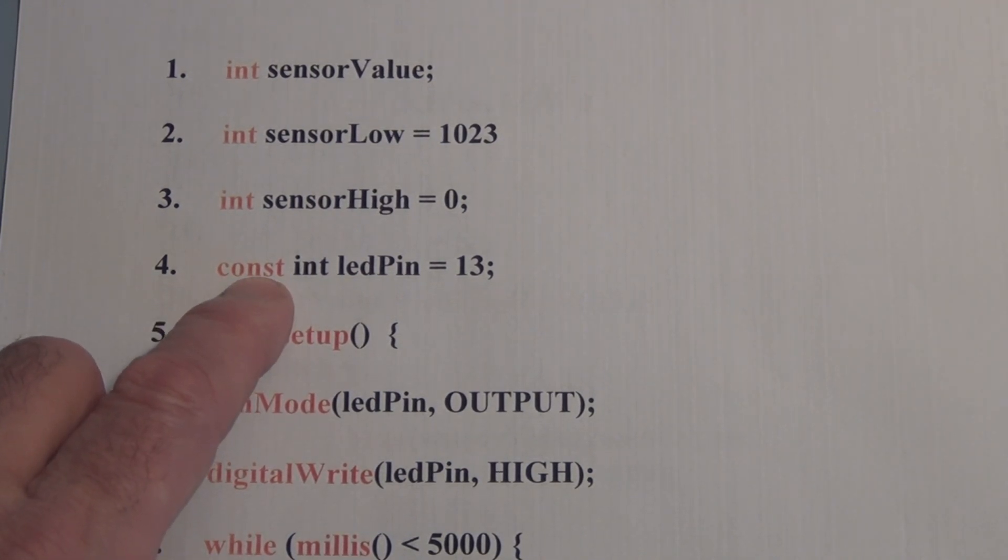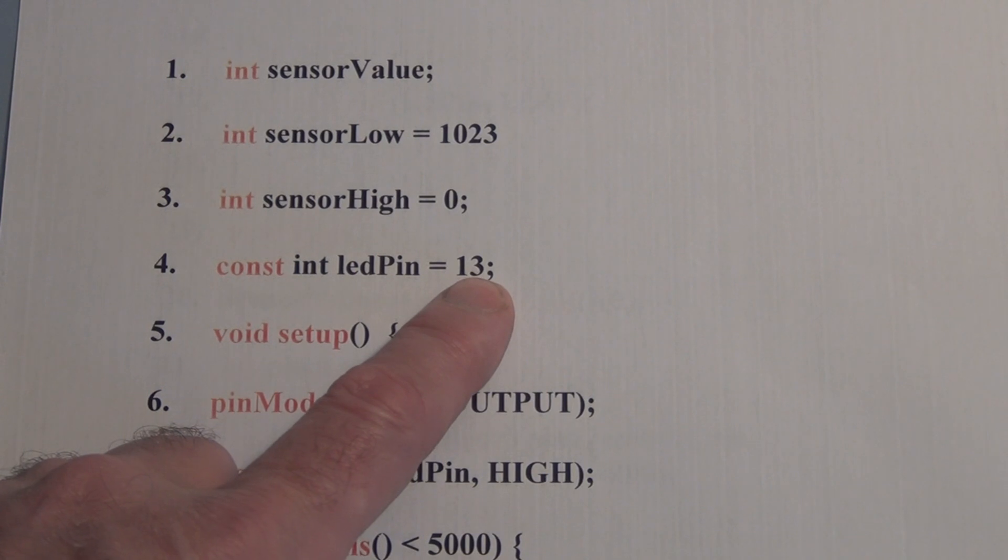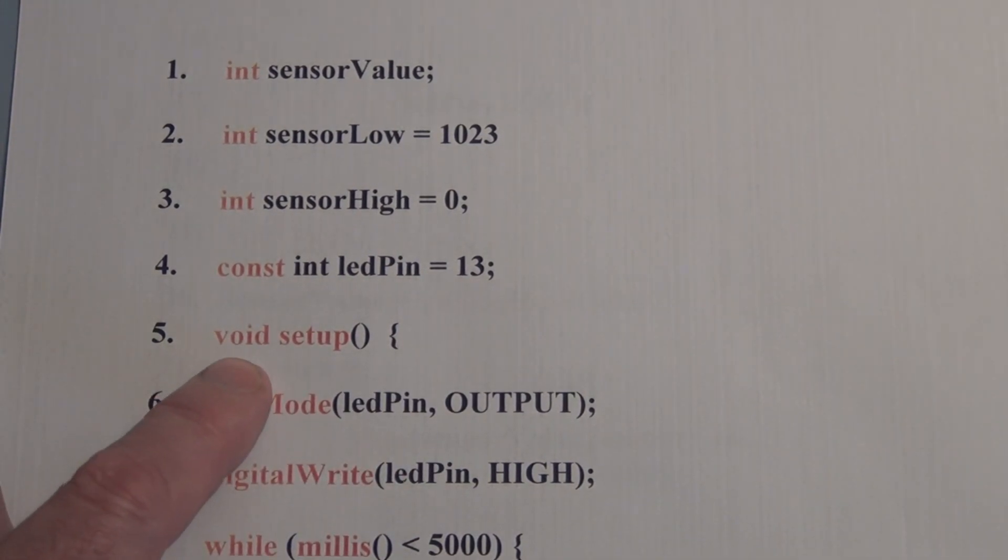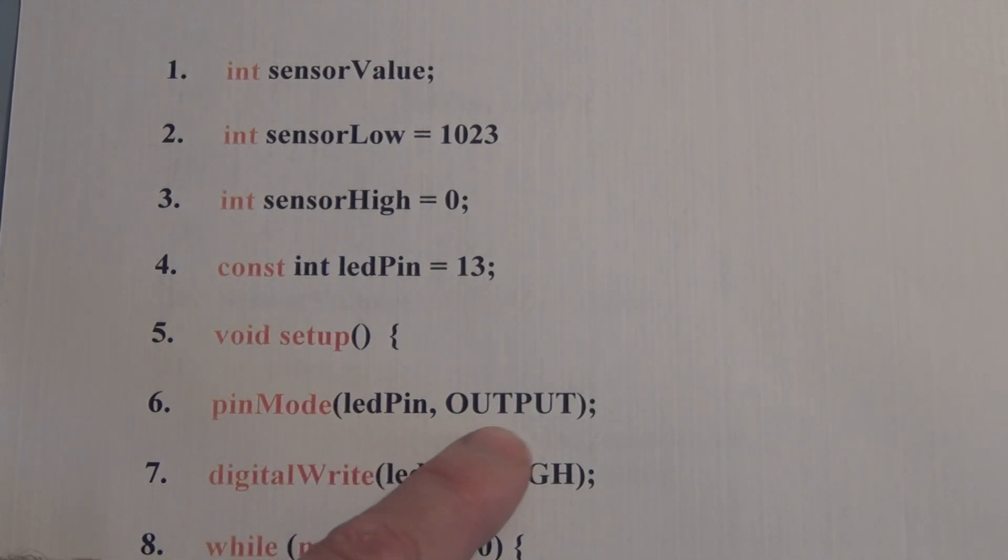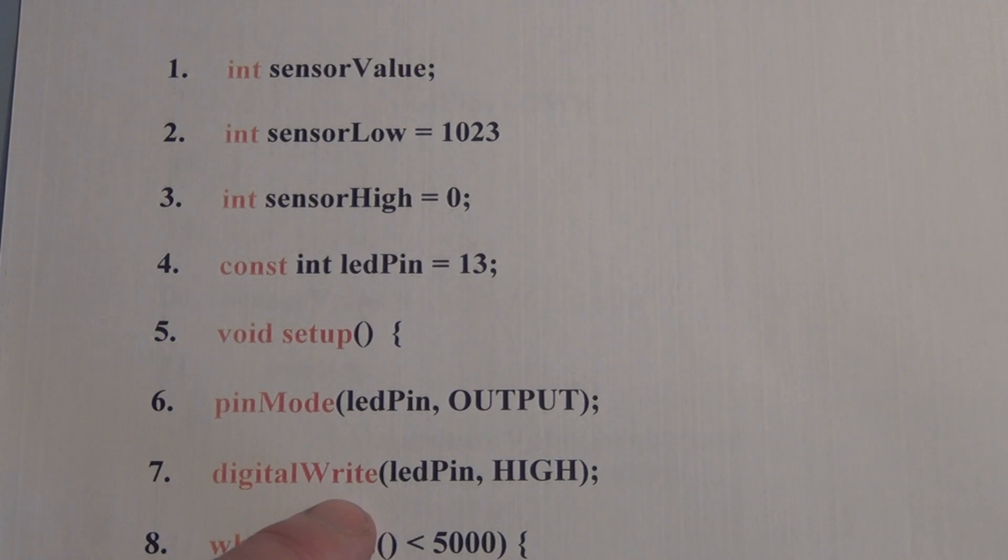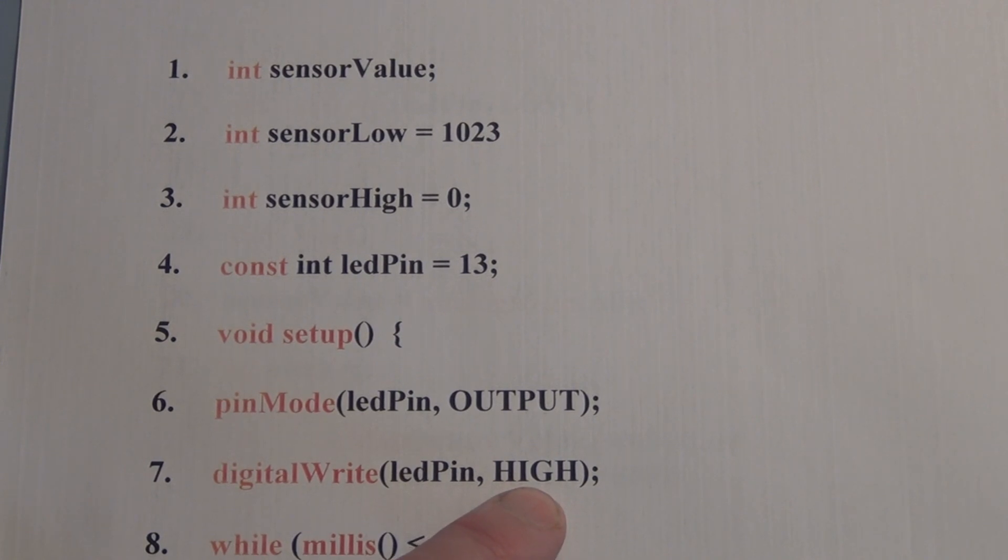Next we will declare a constant integer variable led pin and assign it to pin 13. Pin 13 has an LED on it and the LED we will use to indicate the calibration time. When that LED turns off the calibration period is over. Now we call the void setup function and we use pin mode with two arguments. We're taking the LED variable that we declare as a constant and assigning it as an output. So we're calling pin 13 an output. Next we use digital write with two arguments led pin and we turn it on high.